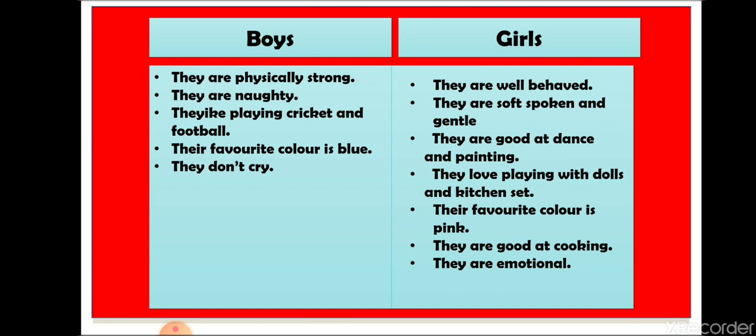For every boy we have assigned some qualities and for every girl we have assigned some qualities. So if a boy wants to pursue his career in classical dance, people start saying classical dance is not meant for boys — that belongs to girls. Or if a boy wants to become a chef, people will say: 'Why do you want to become a chef? Just be an engineer or doctor — that is the career that suits a boy.' All these are what we call stereotypes — when we assign some qualities to a group of people.